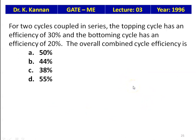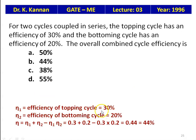For two cycles coupled in series, the topping cycle has efficiency 30% and the bottoming cycle 20%. The combined cycle efficiency: η = η₁ + η₂ − η₁·η₂ = 0.3 + 0.2 − 0.3×0.2 = 0.44 = 44%. The answer is 44%.